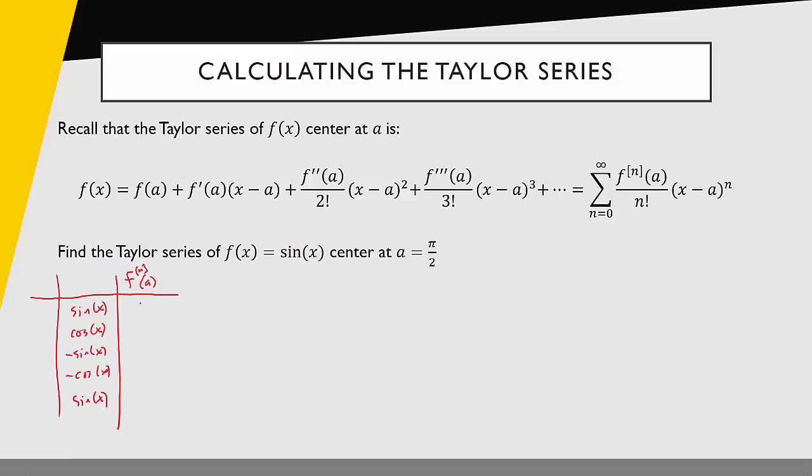I take sine of π/2, I'll get one. Cosine of π/2 is zero. Then I'll have negative one, zero, and one. And then once again, I see that I'm repeating. Now I'm going to plug all these values back into my formula.